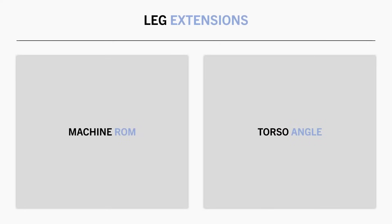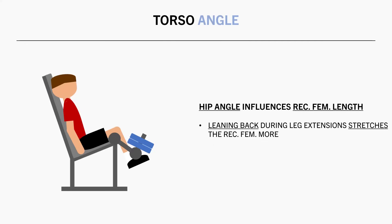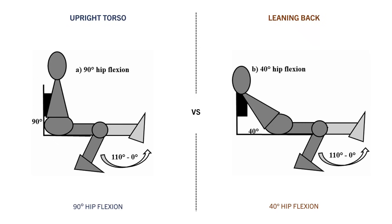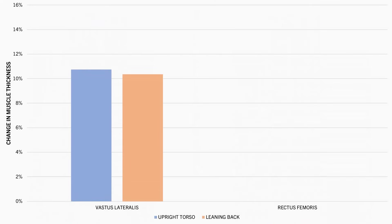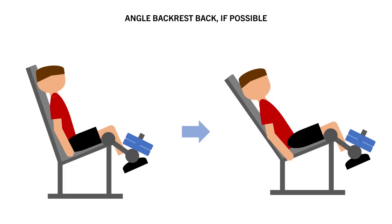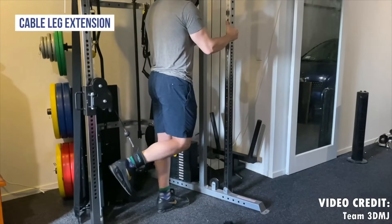The other setup consideration for leg extensions is torso angle. Our hip angle influences the length of the rectus femoris, so leaning further back will stretch the rectus femoris more while being more upright shortens it. Leaning back appears to be more effective for rectus femoris hypertrophy. A study compared leg extensions with hips at a standard 90 degree angle versus leaning back to 40 degrees — the vastus lateralis saw similar muscle thickness increases in both conditions, but the rectus femoris saw greater gains when leaning back. So if possible, angle the backrest further back to maximize rectus femoris hypertrophy. Alternatively, a standing leg extension with a cable achieves the same thing since the hips are extended.